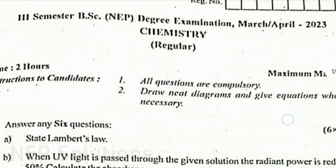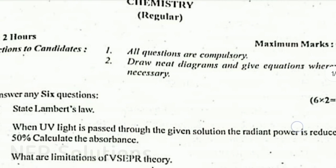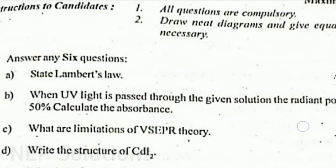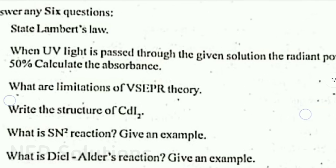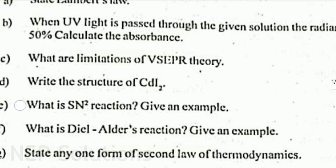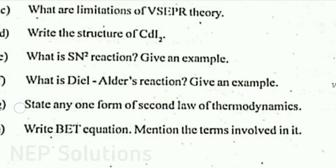A. State Lambert's Law. B. When UV light is passed through the given solution, the radiant power is reduced to 50%. Calculate the absorbance. C. What are the limitations of VSEPR theory? D. Write the structure of CDL2. E. What is SN1 reaction? Give an example. F. What is DL reaction? Give an example. G. State any one form of the second law of thermodynamics. H. Write the BET equation and mention the terms involved in it.